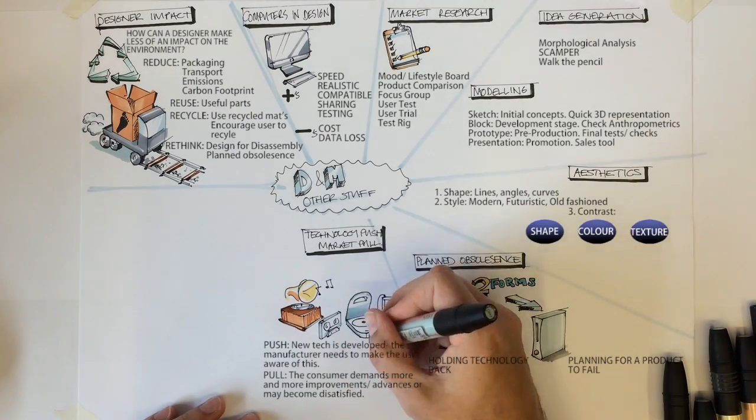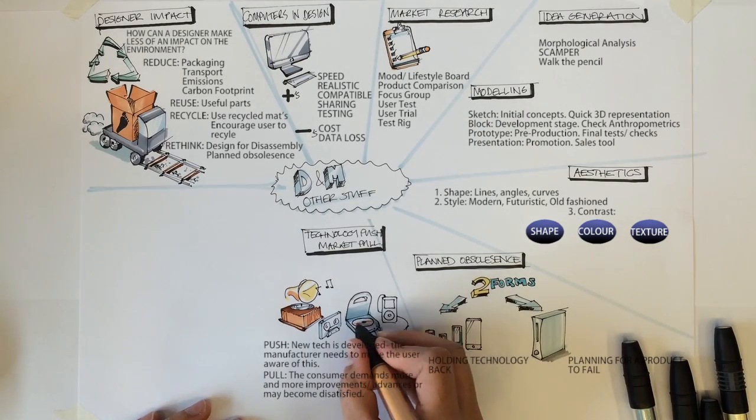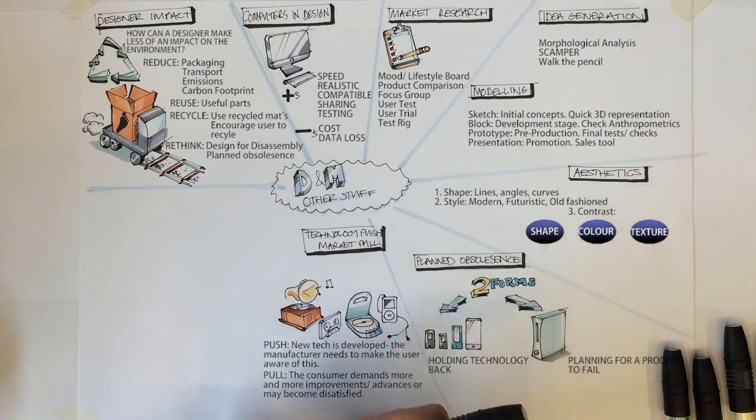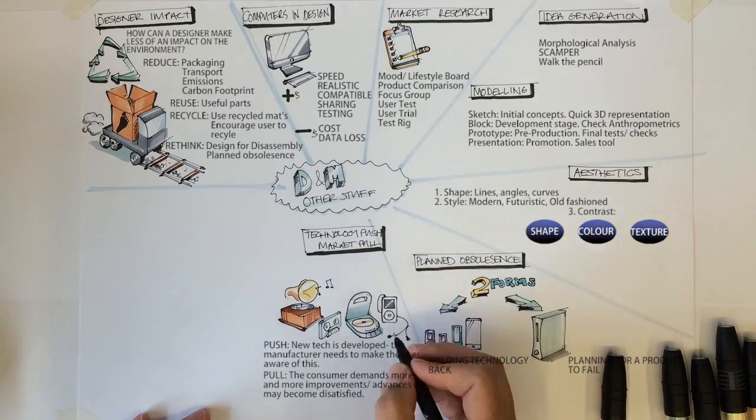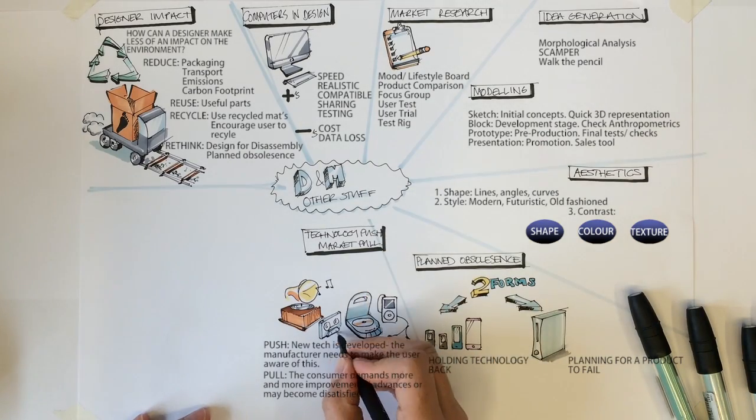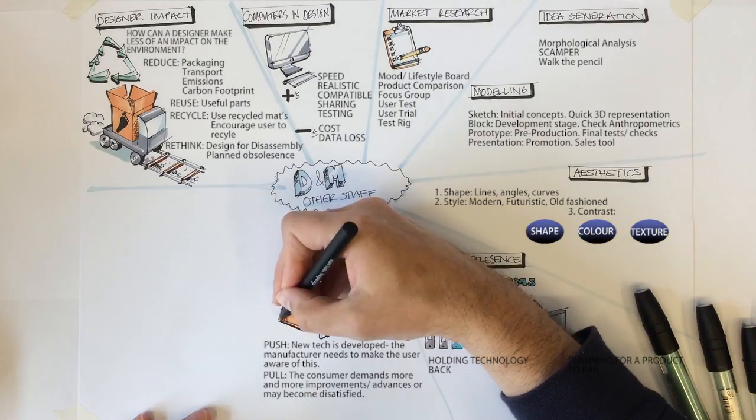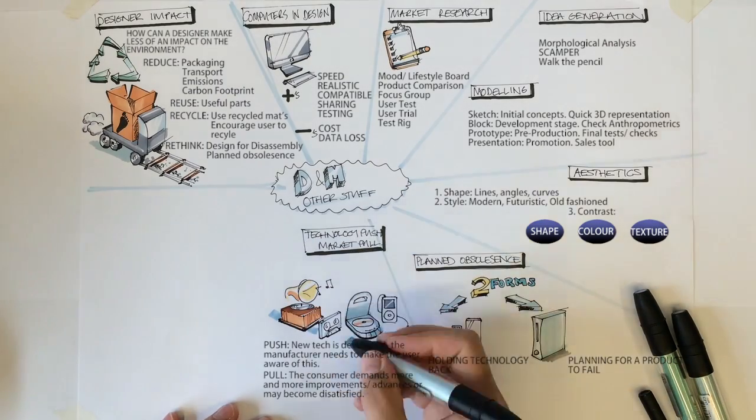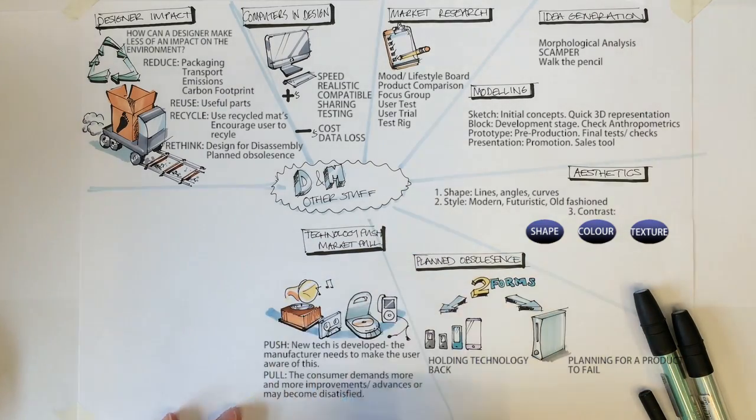Pull. When the consumer gets a taste of this technology, they want more and more from their product. In the case of the MP3, the consumer would no longer be happy with a 1GB storage and would demand more space. This demand would pull the technology along as the manufacturer knows that it will need to keep developing, otherwise they may lose out on future sales. The iPhone suffered a drop of sales between the 4 and the 5 as consumers began to feel they were not seeing enough progress.